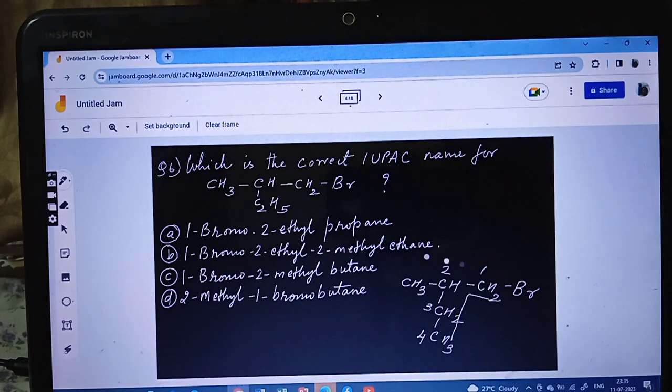So it won't be propane, it won't be ethane. Butane is visible in two places, but first position me bromo should be. First carbon atom me bromo should be. So it is 1-bromo-2-methylbutane. So correct option is option C. Sixth ka correct answer is option C.